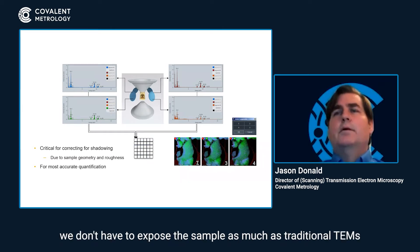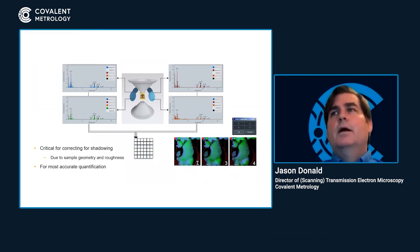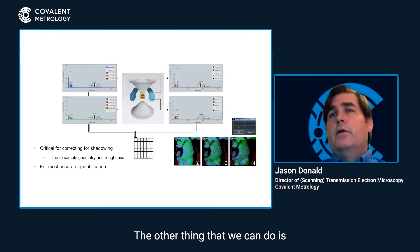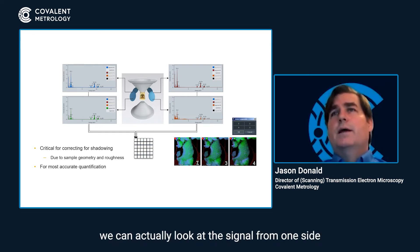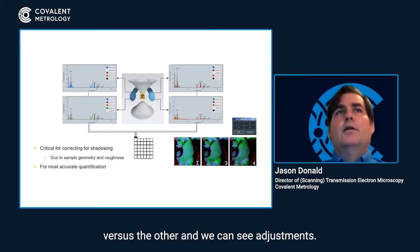we don't have to expose the sample as much as traditional STEM to get good EDS and chemical information about the structure. The other thing that we can do is we can actually look at the signal from one side versus the other, and we can see adjustments. So in the sample here,